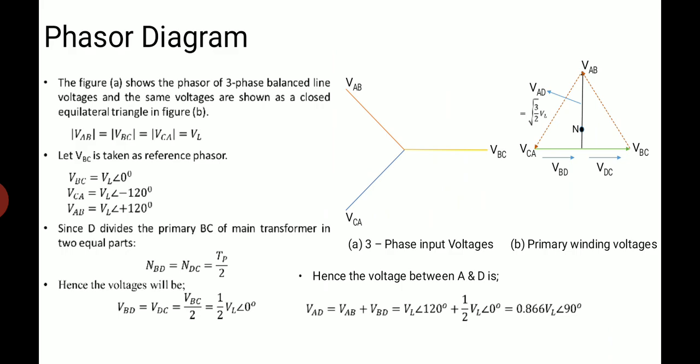The figure A and figure B shows the phasor of three-phase balance line voltages and the same voltages are traced on a closed equilateral triangle. Magnitude of VAB is equal to magnitude of VBC is equal to magnitude of VCA is equal to line voltage when we are considering the balanced three-phase source. Let VBC is taken as a reference phasor, so VBC is shown as VL angle 0 degree.